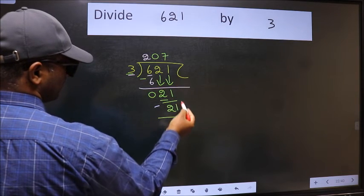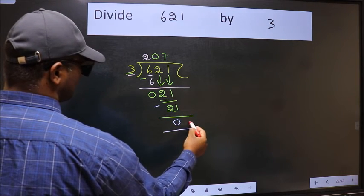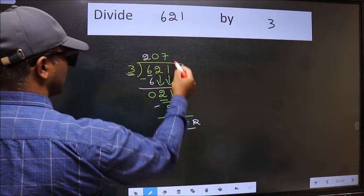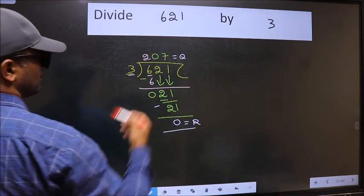No more numbers to bring down. So we stop here. This is our remainder and this is our quotient.